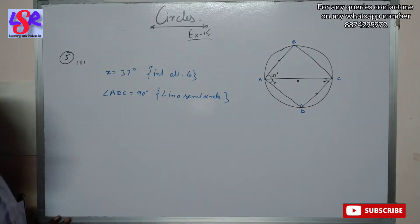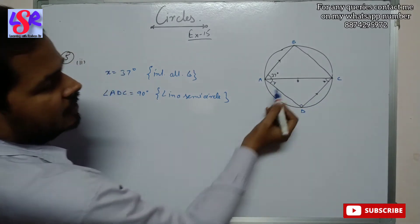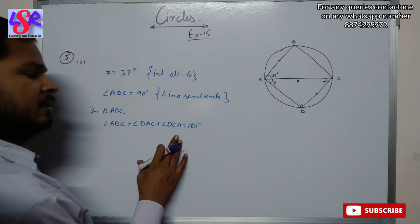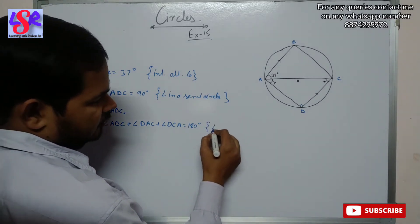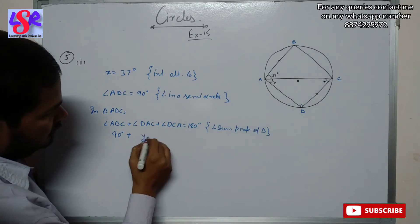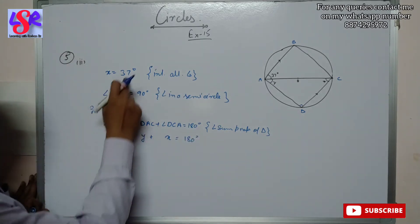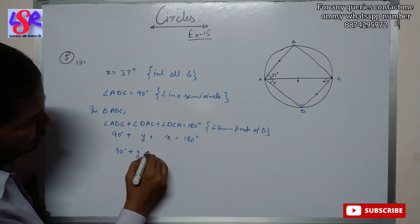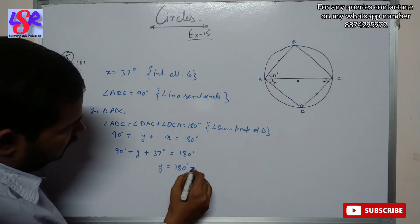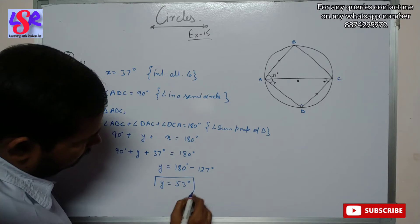To get the value of Y, angle ADC equals 90 degrees as angle in a semicircle. In triangle ADC, angle ADC plus angle DAC plus angle DCA equals 180 degrees. So 90 plus Y plus 37 equals 180. Therefore Y equals 180 minus 127, giving Y equals 53 degrees.